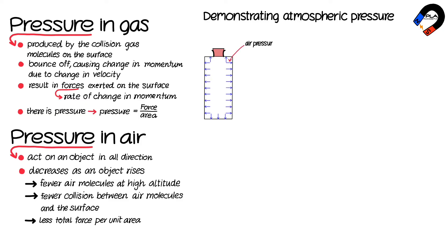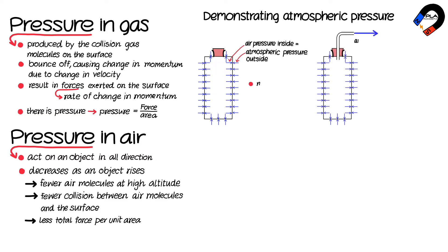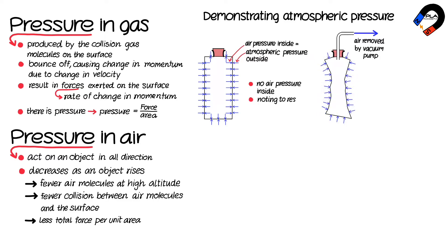Demonstrating atmospheric pressure: there is air pressure inside a can pushing outward, which is equal to the atmospheric pressure outside the can. When the air is removed from the can, there is no air pressure inside, so there is nothing to resist the outside pressure.